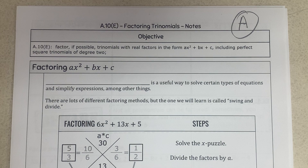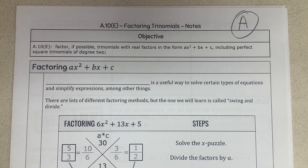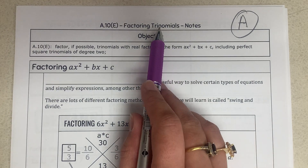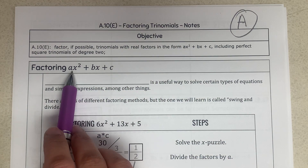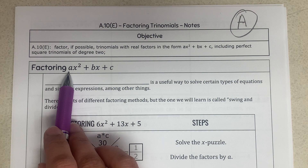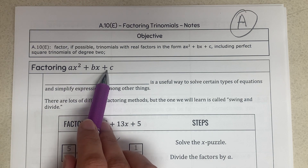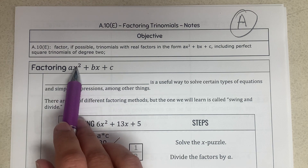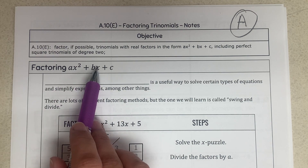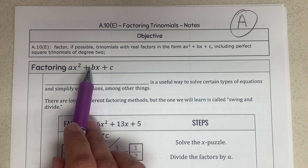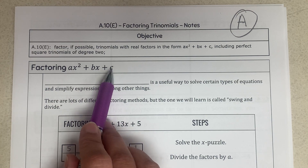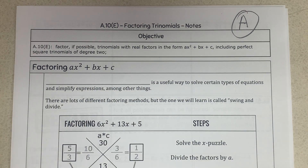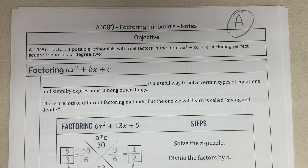Today we are working on factoring trinomials. First, let's review: a trinomial is an expression with three terms — ax squared plus bx plus c. It's always written in this order: x squared comes first, the number next to x squared is a, then bx where b is the coefficient, and c at the end has no variable. Factoring is technically another name for division.